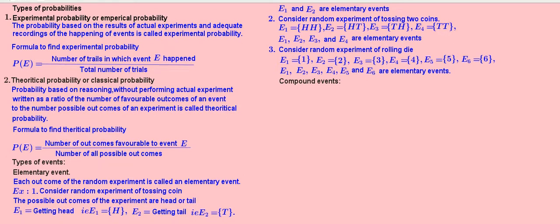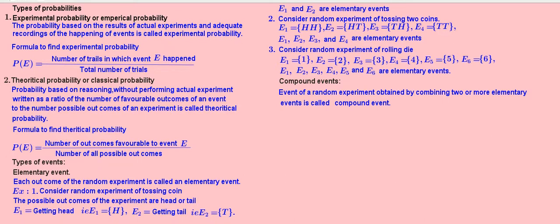Compound events: an event of a random experiment obtained by combining two or more elementary events is called a compound event.